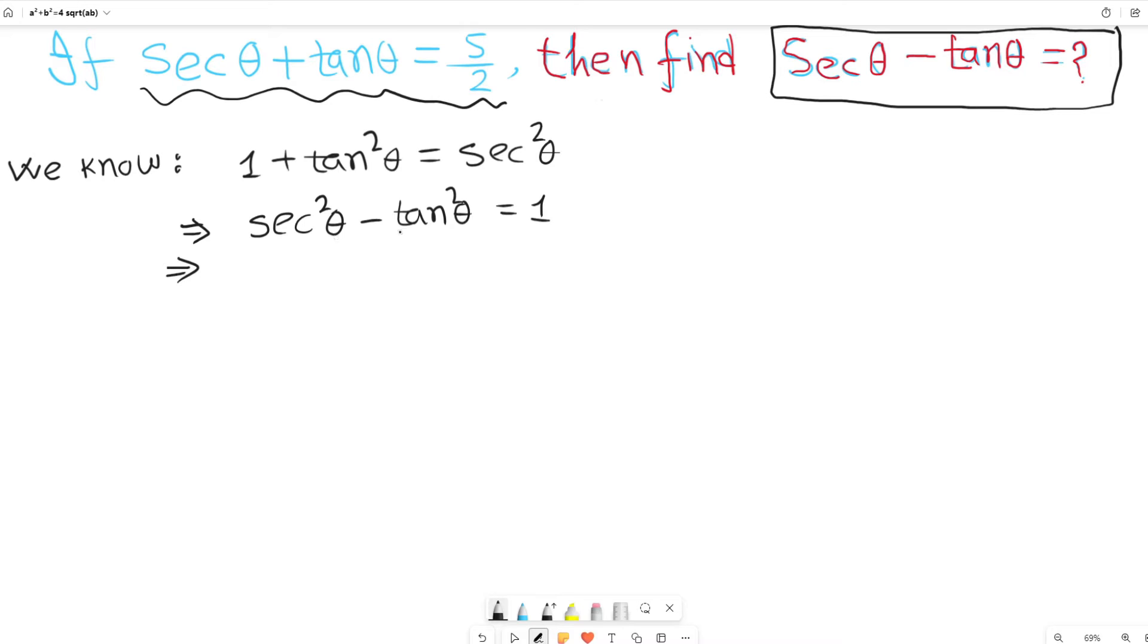This falls under a common mathematical formula which is a squared minus b squared equals a plus b times a minus b. That means sec theta plus tan theta multiplied by sec theta minus tan theta, and the right hand side is equal to 1.